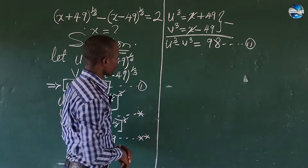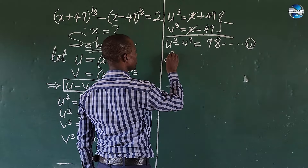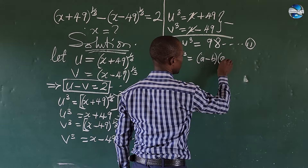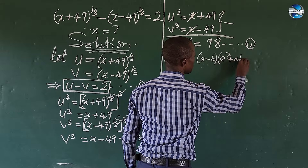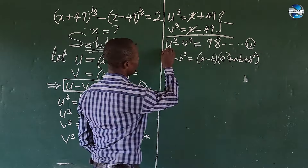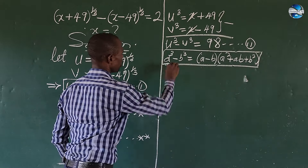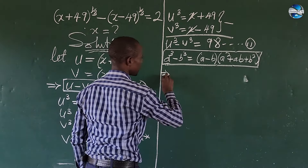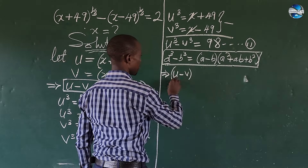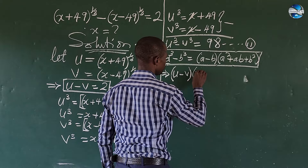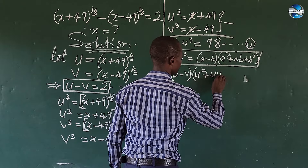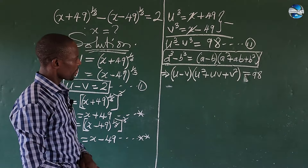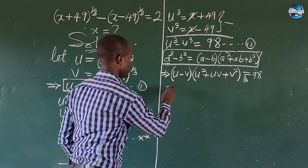From equation 2, we apply the difference of two cubes identity: a³ − b³ = (a − b)(a² + ab + b²). Applying this to u³ − v³ = 98, the left-hand side becomes (u − v)(u² + uv + v²) equals 98.